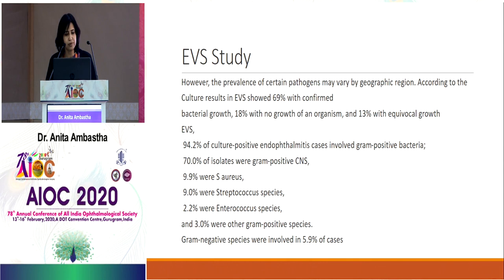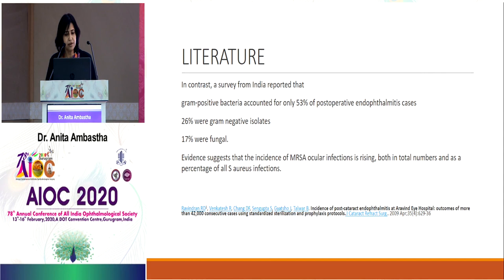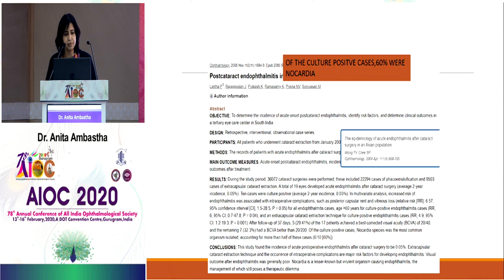The EVS study forms the backbone of how we treat post-op endophthalmitis. In that study, 92–94.2% of culture-positive cases involved gram-positive bacteria: 70% coagulase-negative staph, 9.9% staph aureus, 9% streptococcus, 2.2% enterococcus, and no anaerobes. In contrast, Indian literature shows gram-positive bacteria accounted for only 53% of cases, 26% gram-negative, and 17% fungal. Importantly, MRSA ocular infections are rising in India.